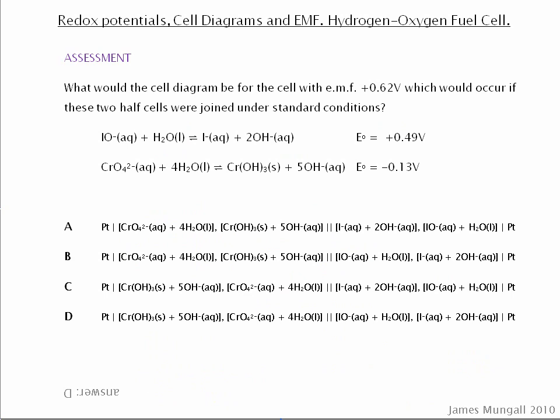Okay, so hopefully that's made sense. And if so, then perhaps you'd be able to have a look at this. It says, what would the cell diagram be for the cell with EMF plus 0.62 volts, which would occur if these two half cells were joined under standard conditions?